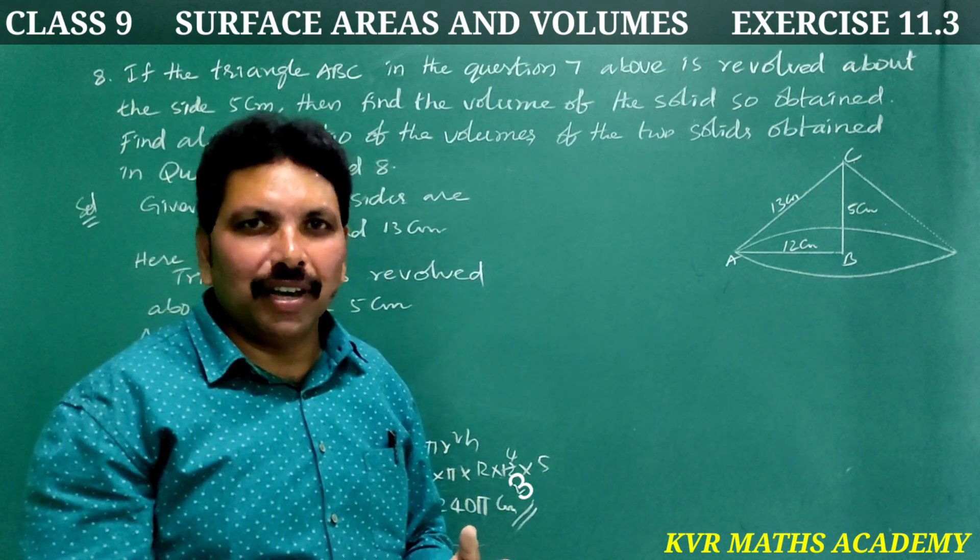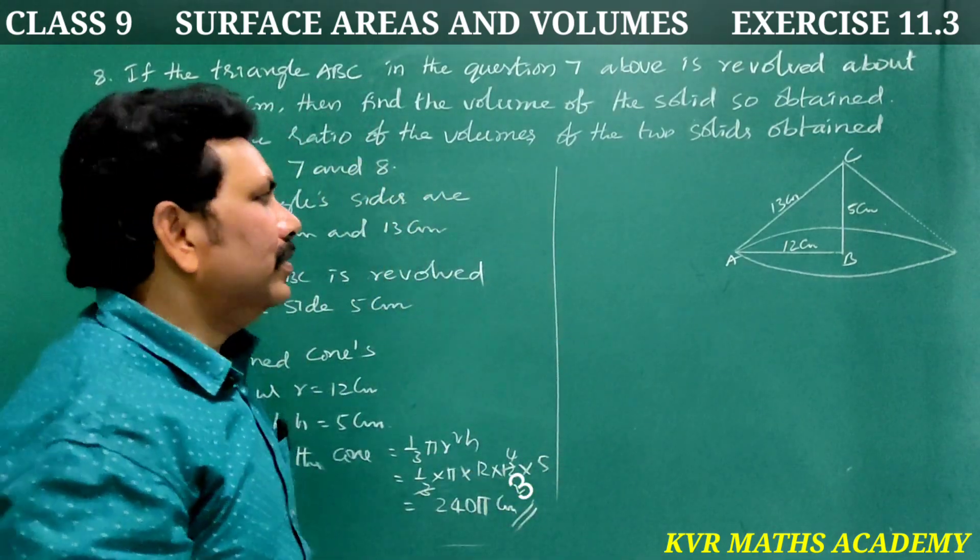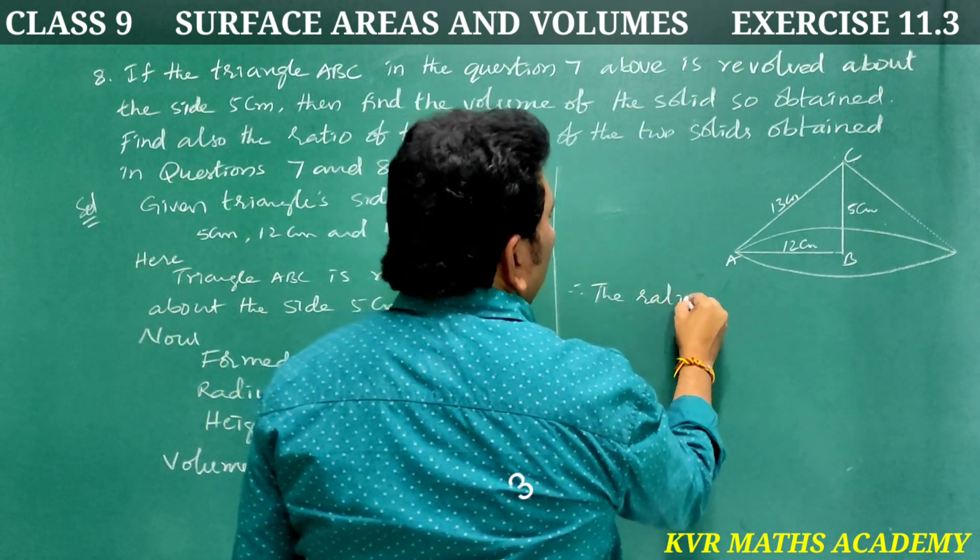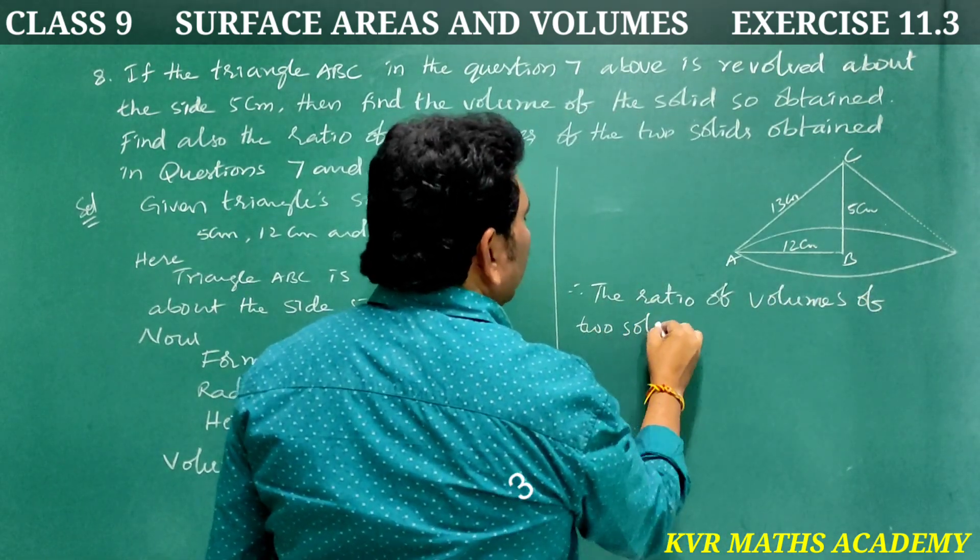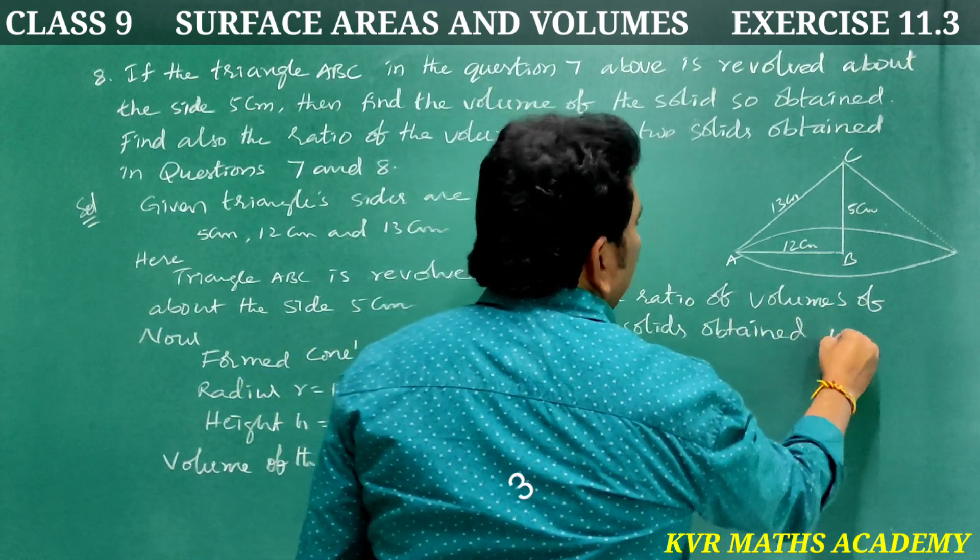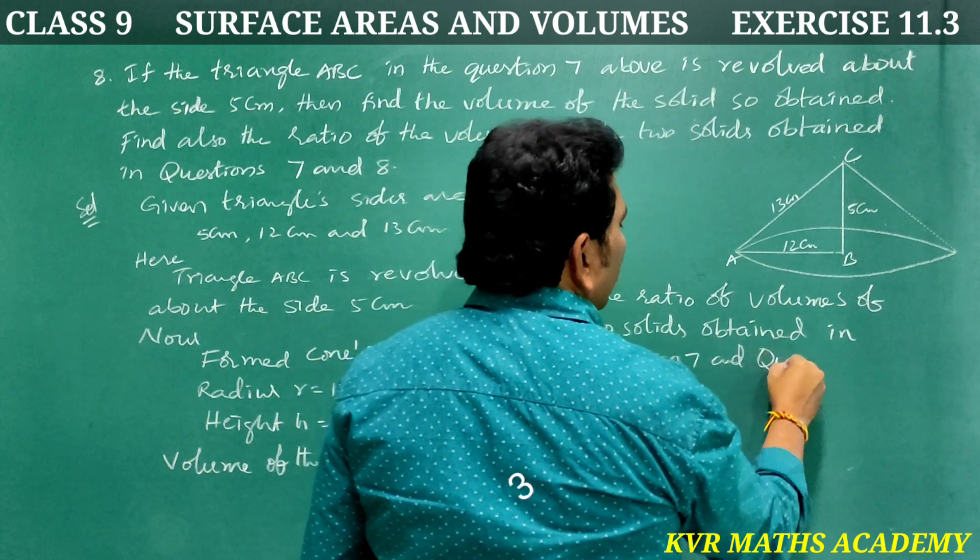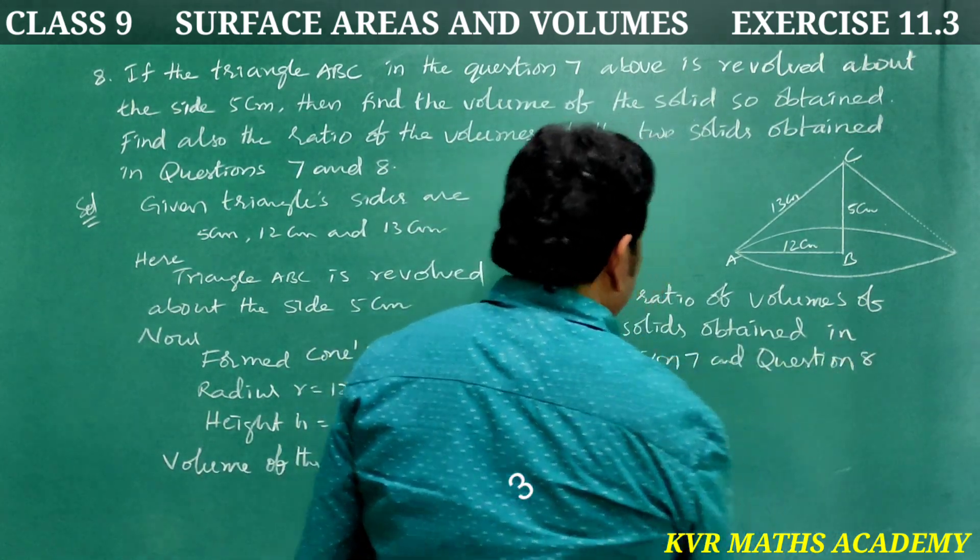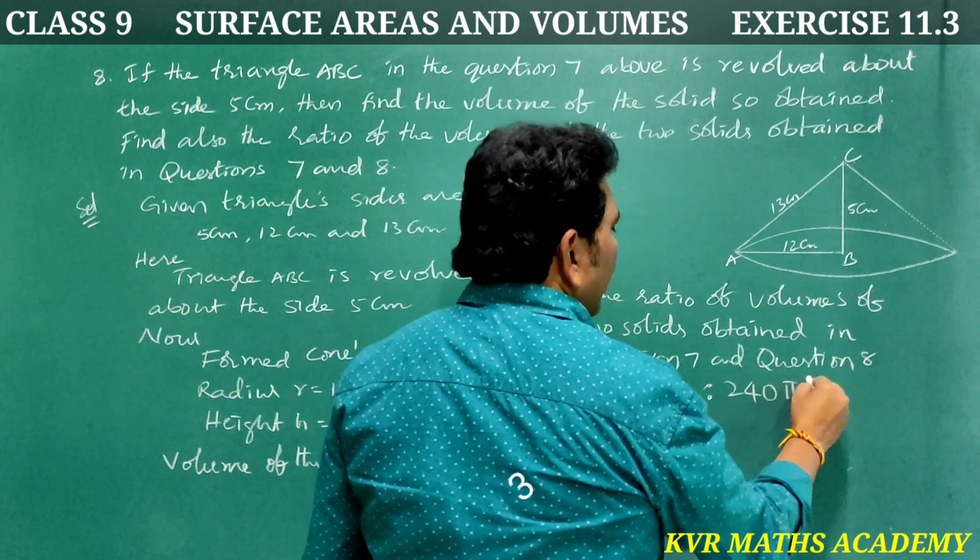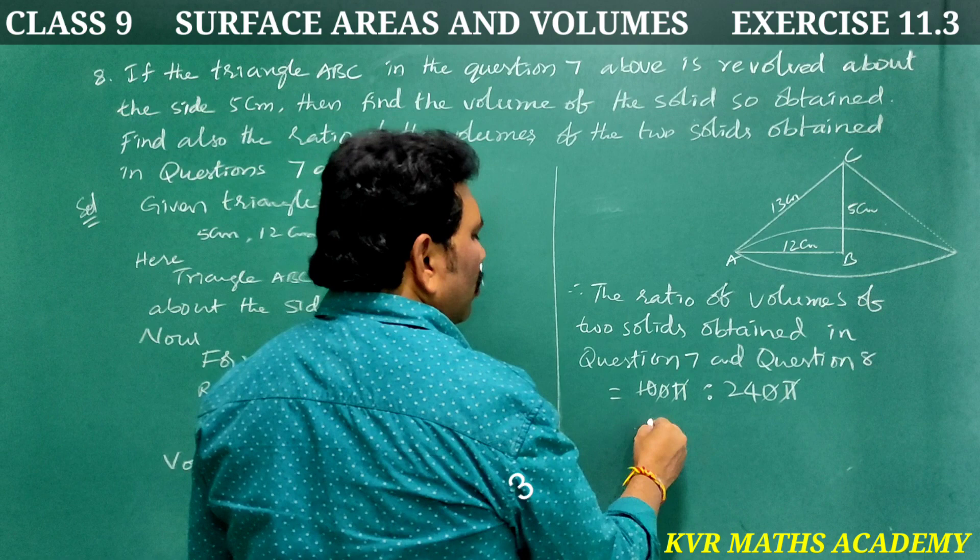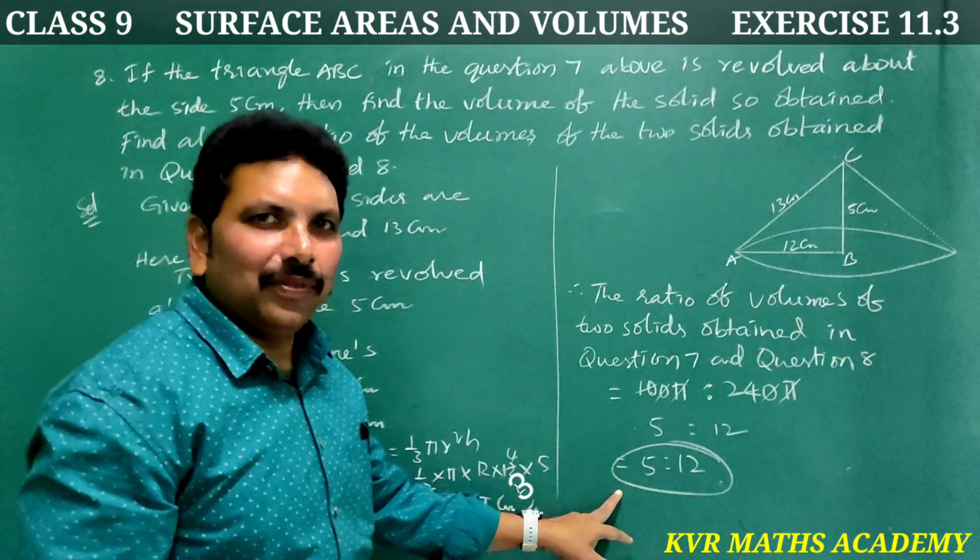The ratio of volumes of two solids obtained in question 7 and question 8 is 100π to 240π, which simplifies to 5 to 12. Have you understood clearly?